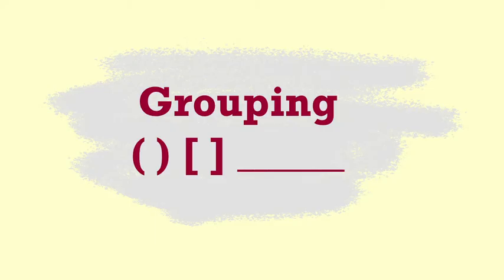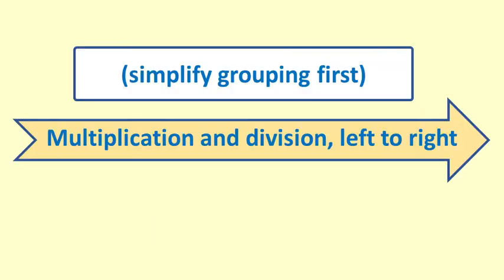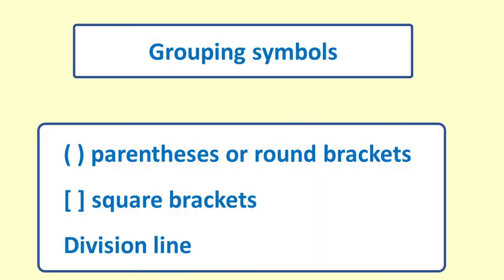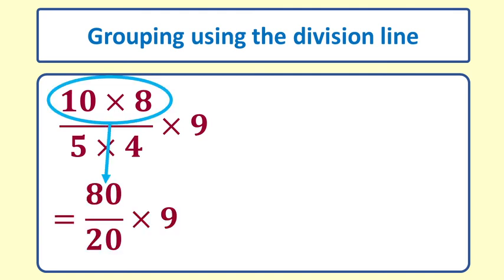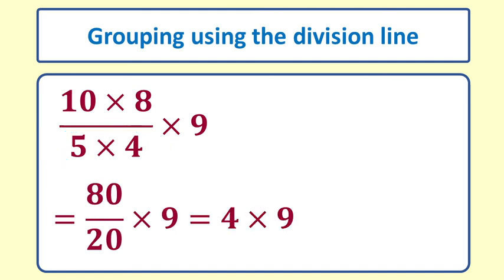Grouping. Just as we did with addition and subtraction we can change the order in which things are calculated by using parentheses or brackets. The division line or vinculum also acts as a grouping mechanism. In this example we would perform the 10 times 8 and the 5 times 4 before proceeding. The 10 times 8 becomes 80 and the 5 times 4 becomes 20 so we have 80 divided by 20 times 9 which is 4 times 9 which equals 36.